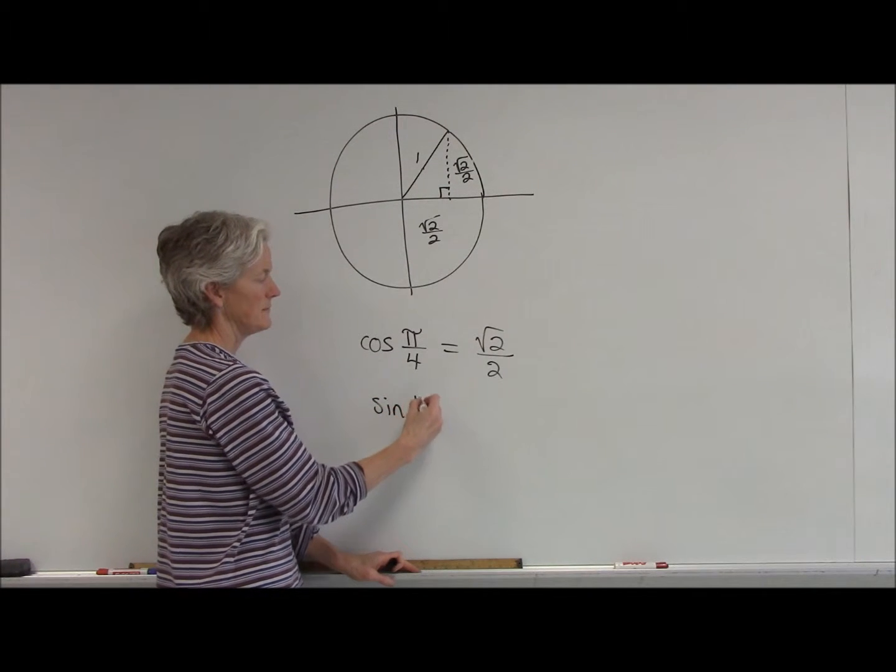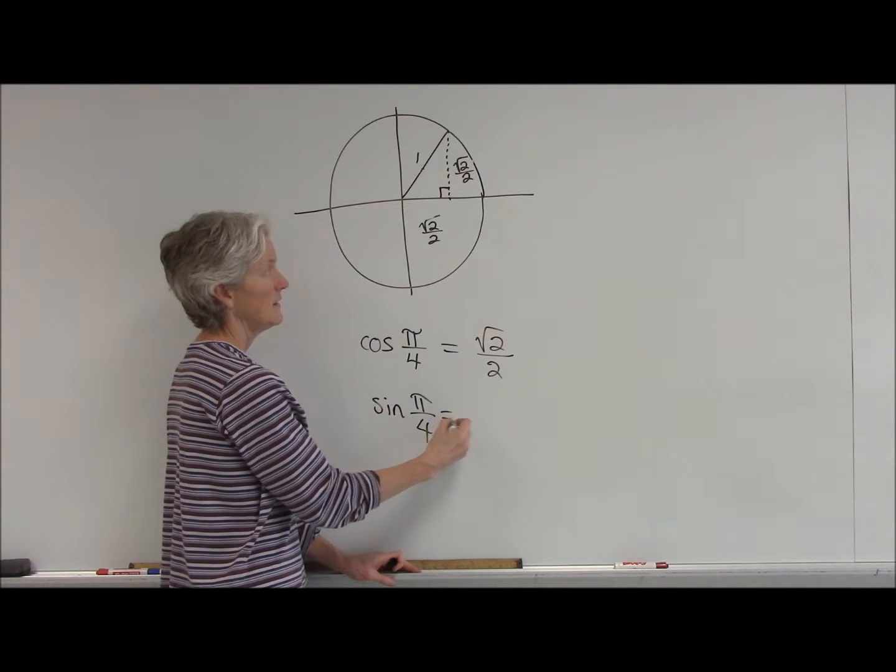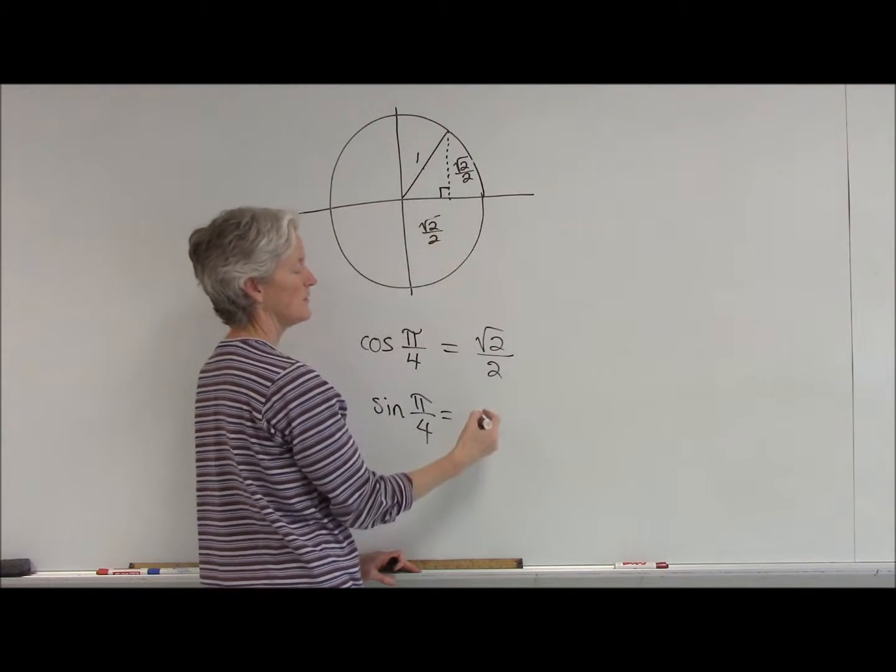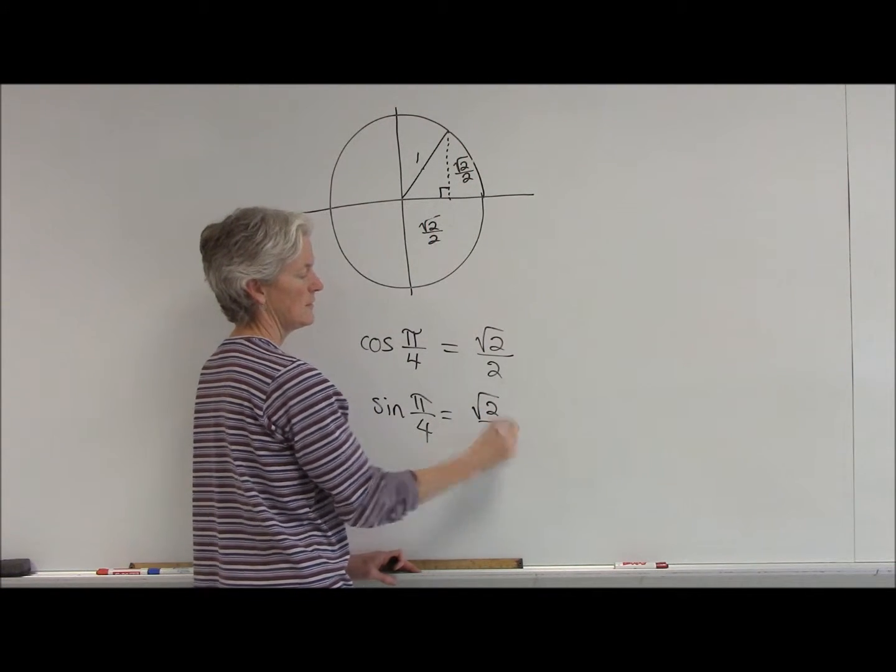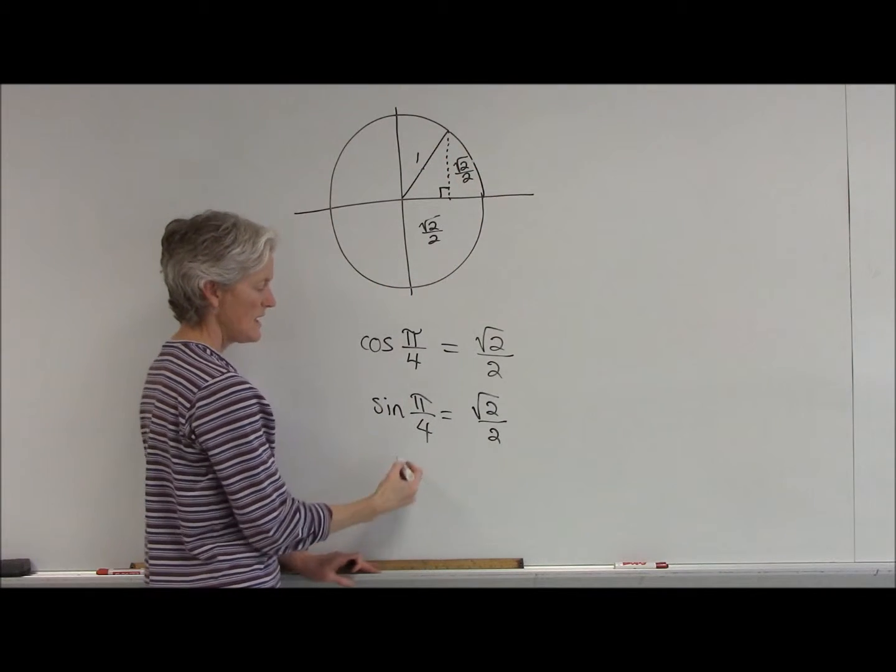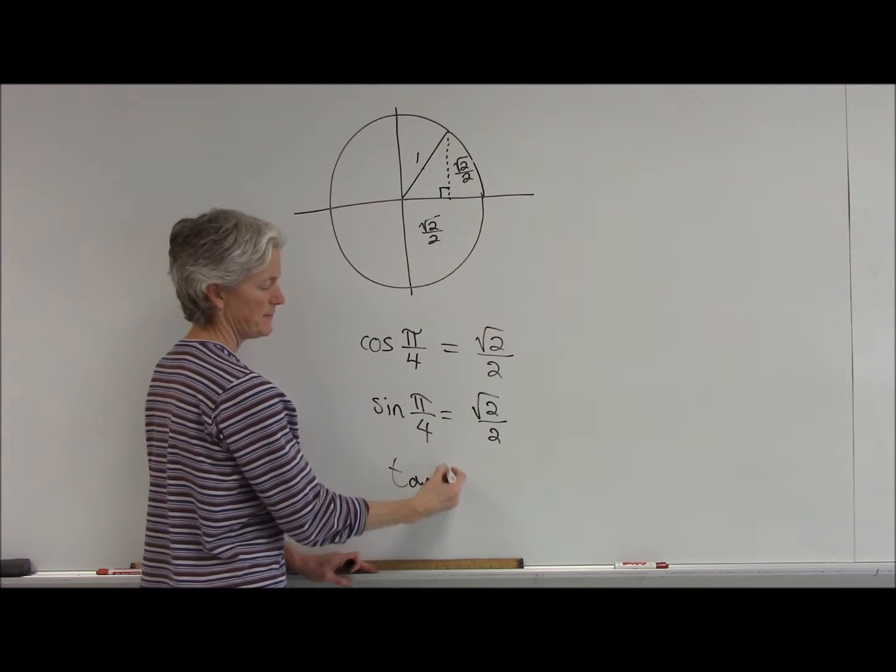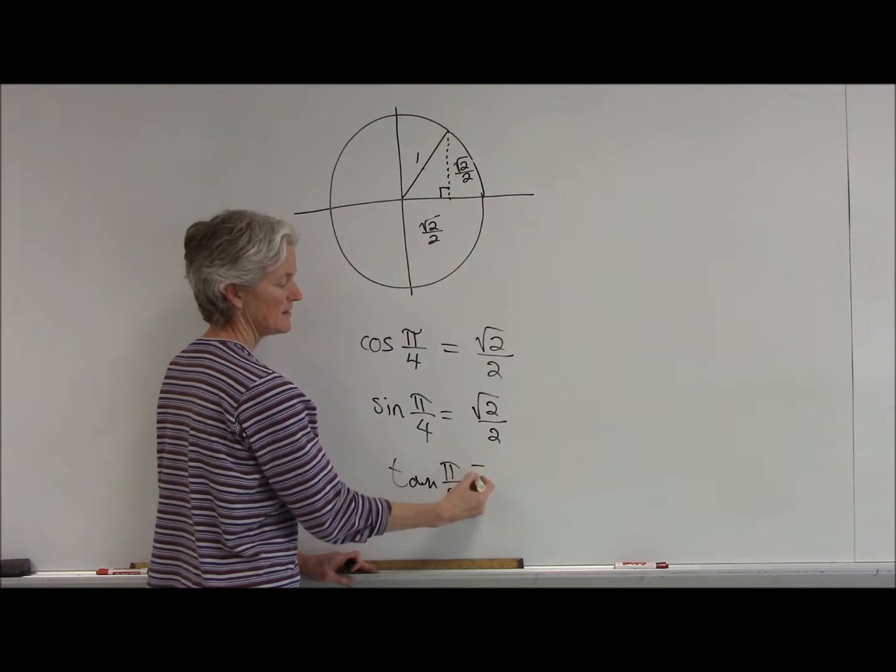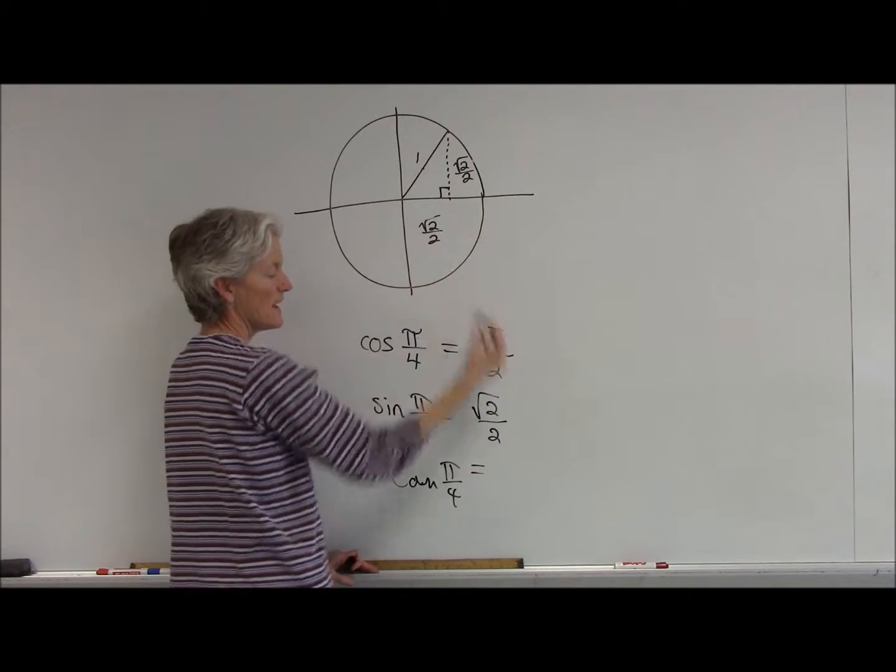My sine is also going to be square root of 2 over 2, because it is the y value over the 1, and my tangent of pi over 4 radians is the y over the x, which is 1.